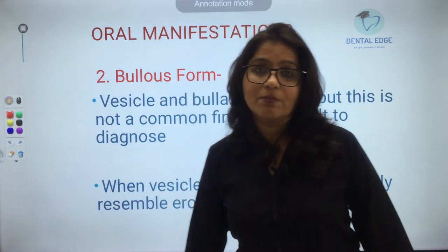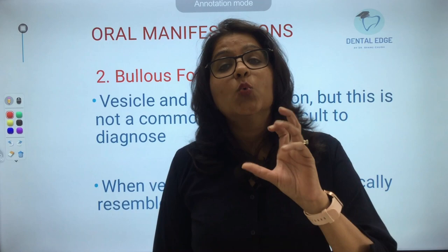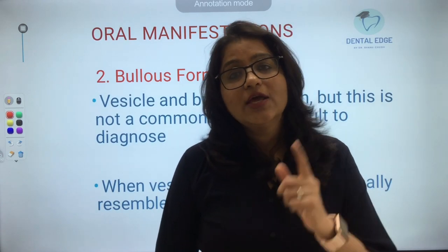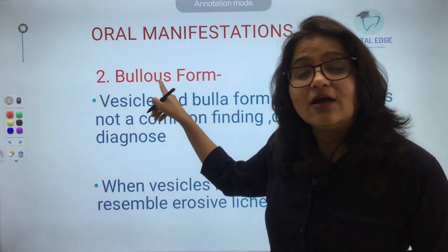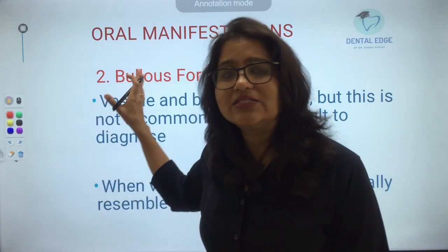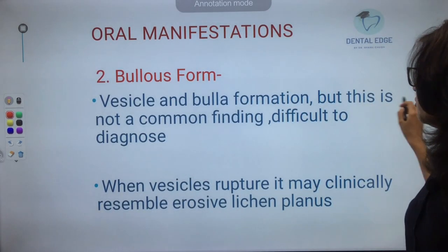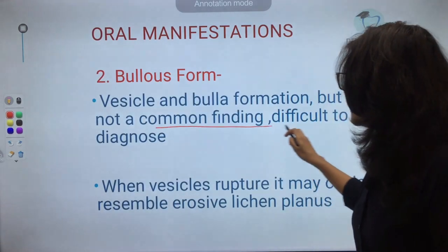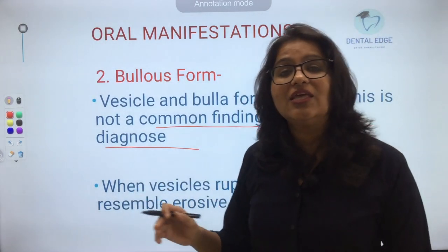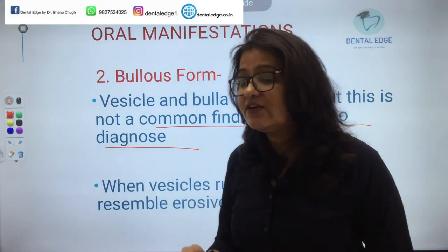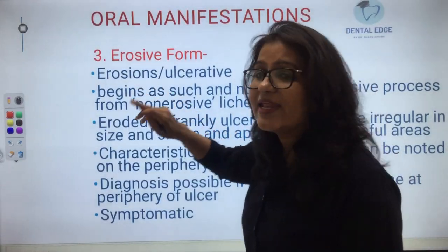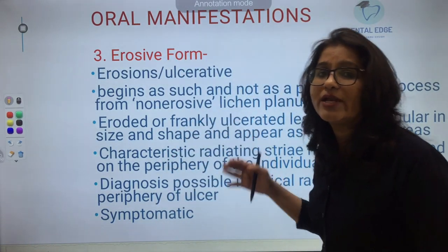The next type is the bullous form. As the name suggests, there will be vesicles and bullae. This is not a common finding and is difficult to diagnose. These bullae and vesicles may rupture to leave behind an erosive surface, which may be confused with the erosive form of lichen planus.